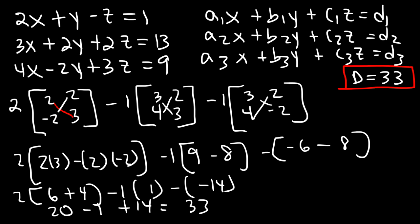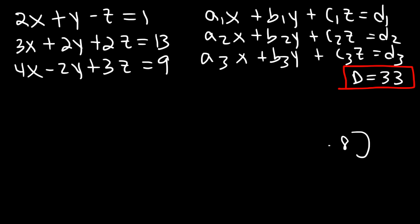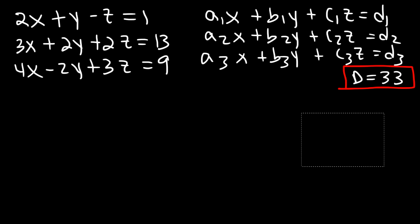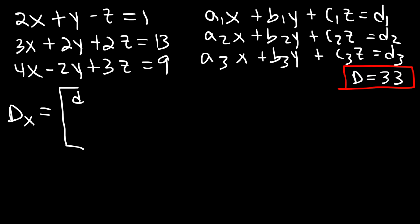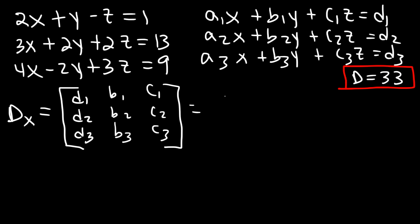Now let's calculate dx. For the elements in dx, replace the coefficients in front of x with d1, d2, d3. So it's going to be d1, d2, d3, and then b1, b2, b3, and c1, c2, c3. So d1 is 1, d2 is 13, and d3 is 9. And then the b's are the coefficients in front of y, and c1, c2, c3 are the coefficients for z.